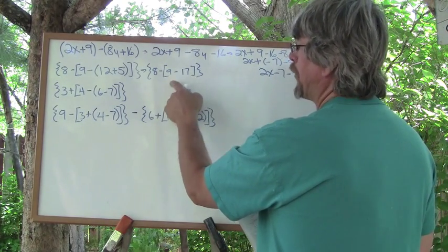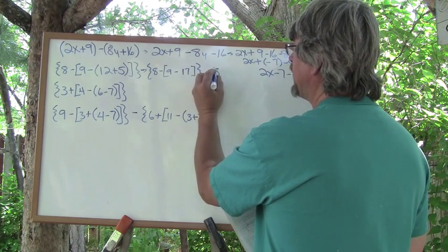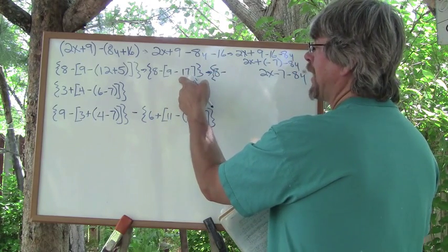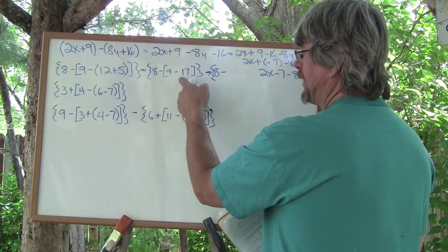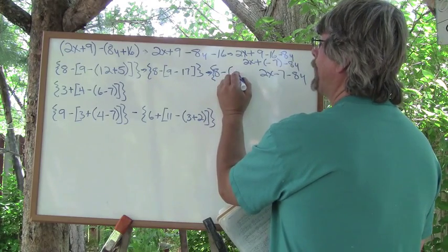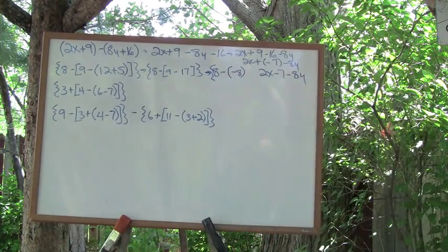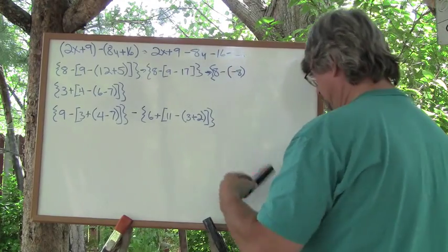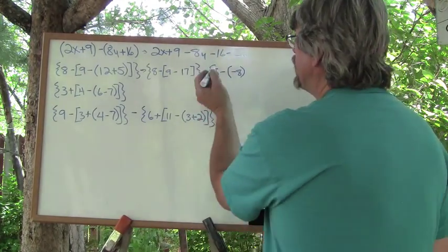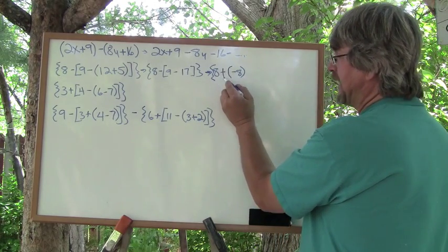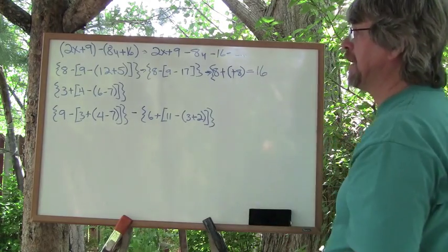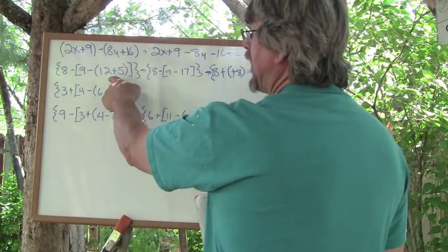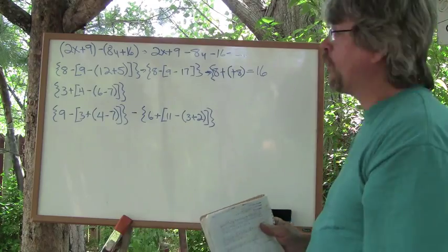Now we do the next innermost grouping symbol, which is the brackets within the braces. So this becomes 8, minus — what's 9 minus 17? It's 8. We have an 8 minus a minus 8. We can negate the negative, and this simply becomes 16. One step at a time, beginning with the innermost grouping symbol and moving outward. Same kind of problem as the previous one, just different numbers.